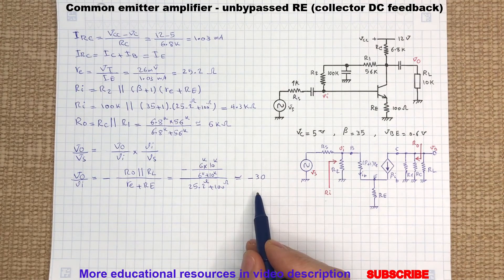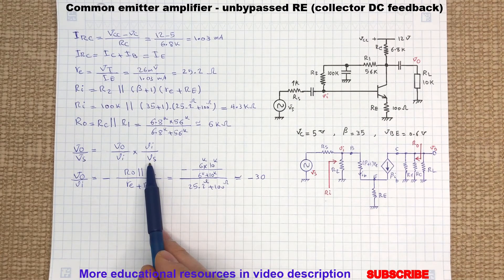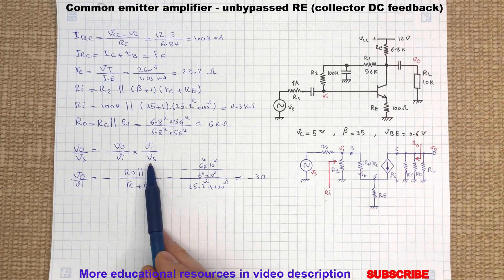Therefore the common emitter amplifier gain is about 30. Now we are going to find VI to VS gain, which is considered a simple voltage divider.